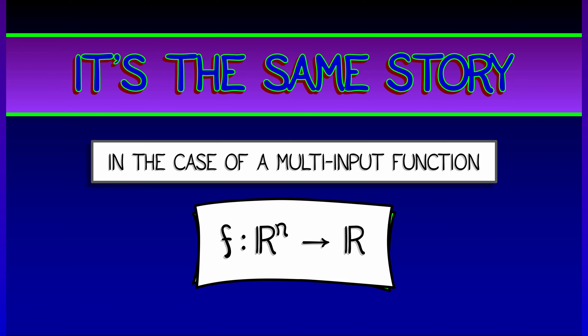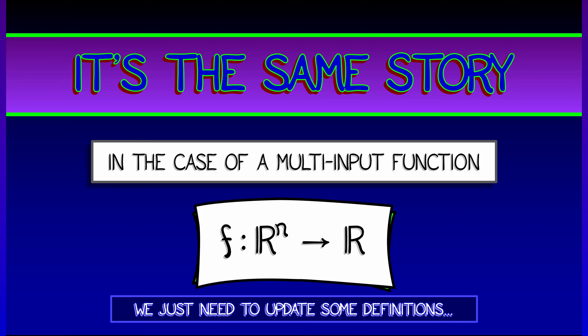Let's say that we've got a function that's got multiple inputs, n inputs, and then one output. We're going to need to update some definitions, update the second derivative test, and then tell the same story.